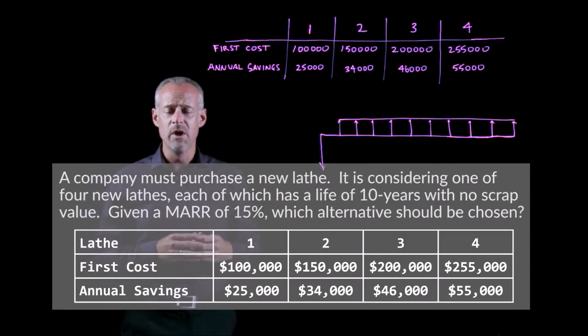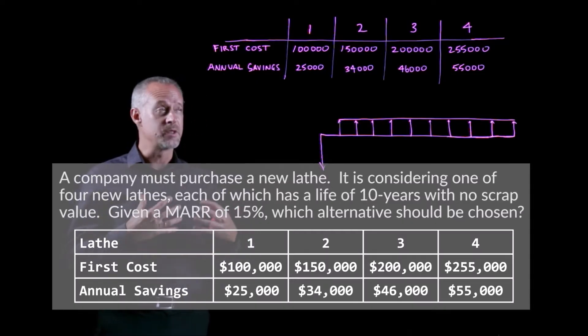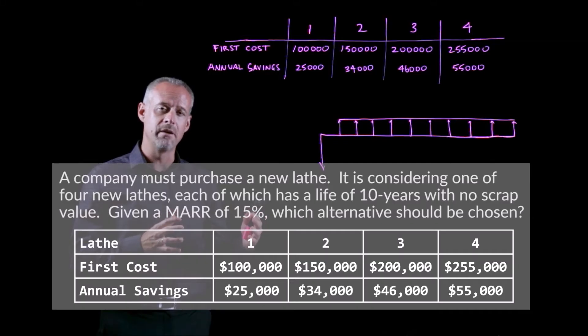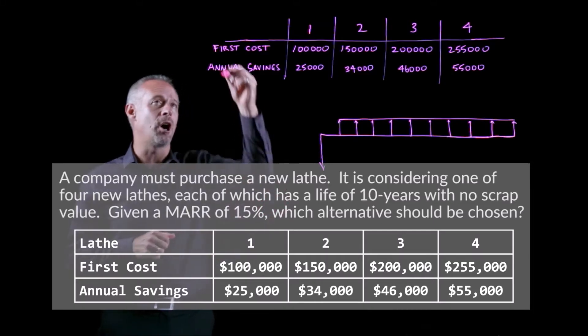In the problem, we learn about this company that's considering four possible investments. All of these investments are mutually exclusive, meaning if we do one, that means we are not doing any of the other ones. The potential investment amount for the four possible alternatives, we tend to call a first cost.